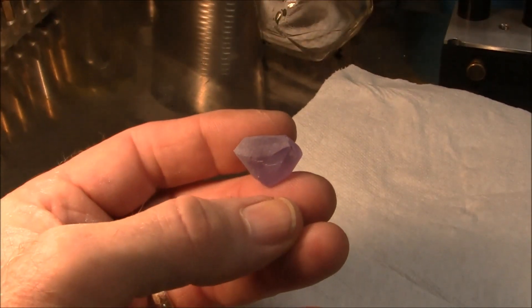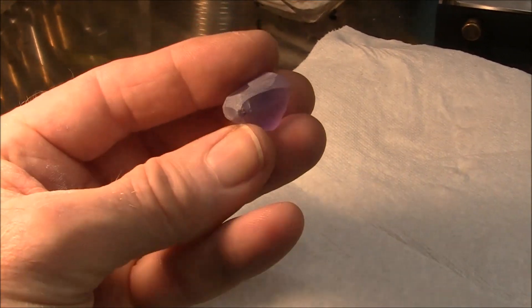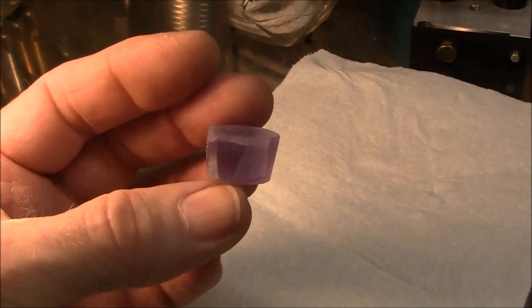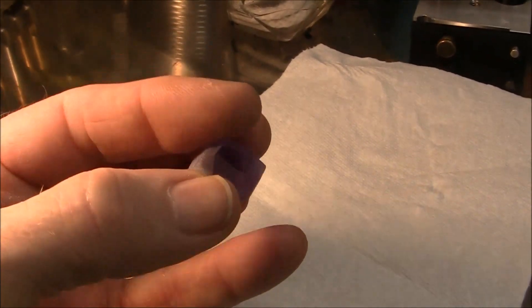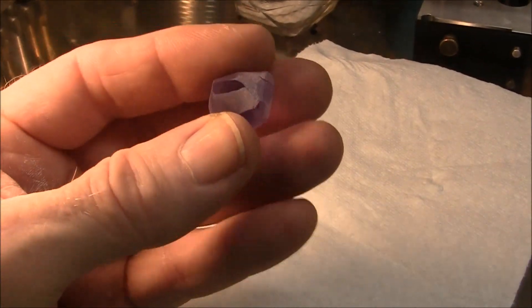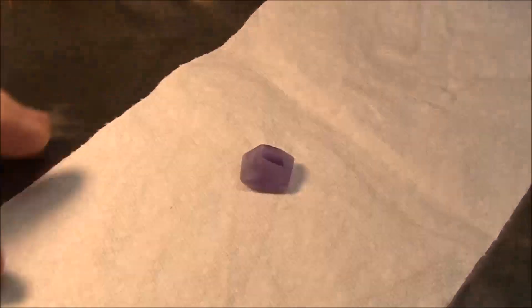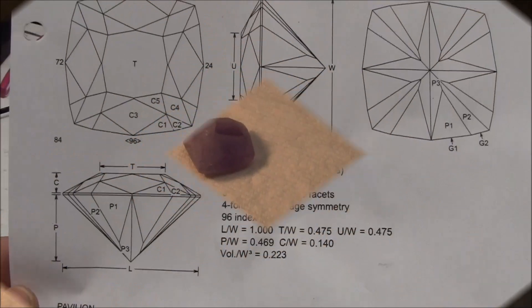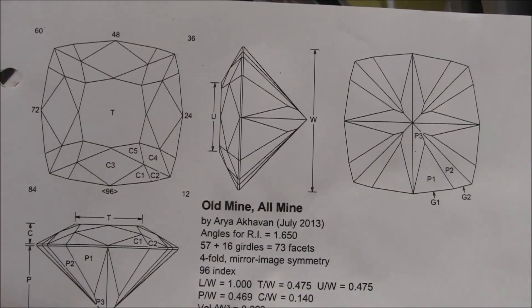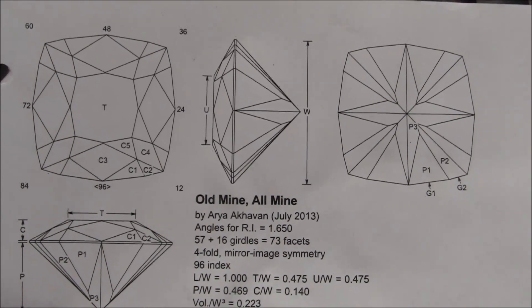Here I've preformed the stone. Next I'm going to put it on the dop stick. I'm going to cut this design once again. It's a variation of the old mine cut by Mr. Archivan.